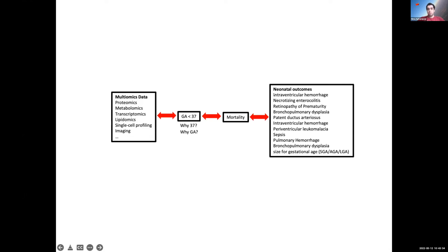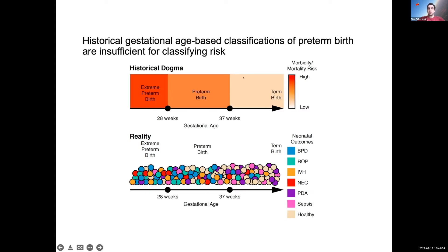That definition stuck around, as often happens in medicine. But in reality, preterm birth is not a homogeneous problem — neonatal mortality comes from various morbidities in different organs including brain hemorrhages, gut complications, and inflammation. We can't treat this as one disease. Traditionally we bucket babies into term, preterm, and extreme preterm categories, but some babies born early are fine while others born after 37 weeks are still at risk.